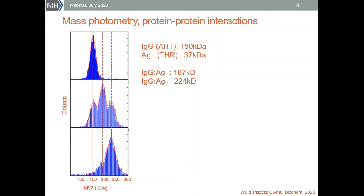Here I am showing you data for the IgG antibody binding human thrombin — these are the first mass distributions we obtained for the system when trying different things on our new mass photometry instrument. On the top panel we have the antibody alone at a concentration of about 25 nanomolar. As you can see, it is a clean preparation with mostly a single 150 kilodalton peak.